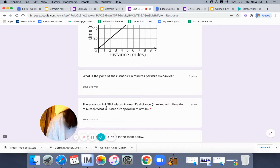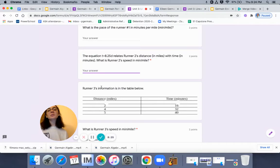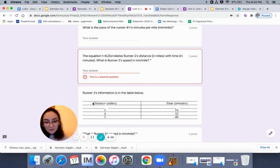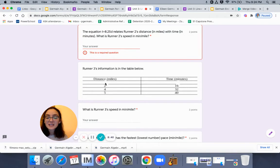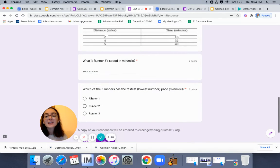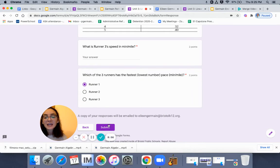Now, equation T equals 8.5D relates to the runner's distance in miles with time in minutes. What is runner 2's speed per minute mile? What is the constant rate of speed? What is the speed of this runner right here? Tell me right here. Now, runner 3's information is in the table below. 2 miles is 16 minutes. 4 miles is 32 minutes. So how long does it take this person to go one mile? What is their speed in miles per minute? Then lastly, which of the three runners is the fastest, the lowest number pace? You're going to tell me here. Select it and hit submit.